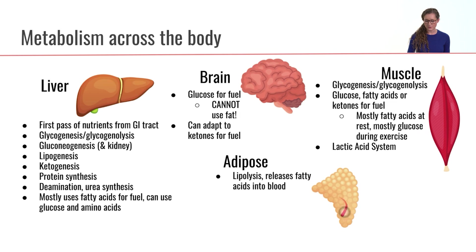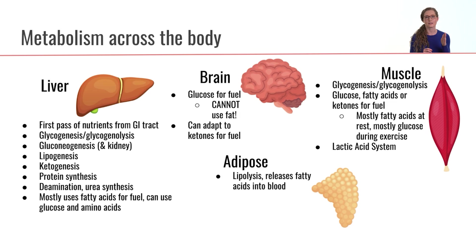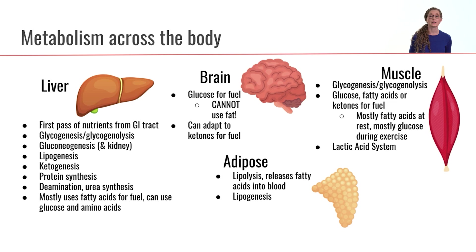Next let's talk about adipose tissue — represented here by a bunch of adipocytes. Adipose tissue is involved in lipolysis, which is breaking apart fat by cleaving fatty acids off of the glycerol backbone of a triglyceride, and then releasing those fatty acids into the bloodstream. Adipose tissue is also involved in lipogenesis — building fats by taking two-carbon units from acetyl-CoA and adding them together to build long fatty acid chains.